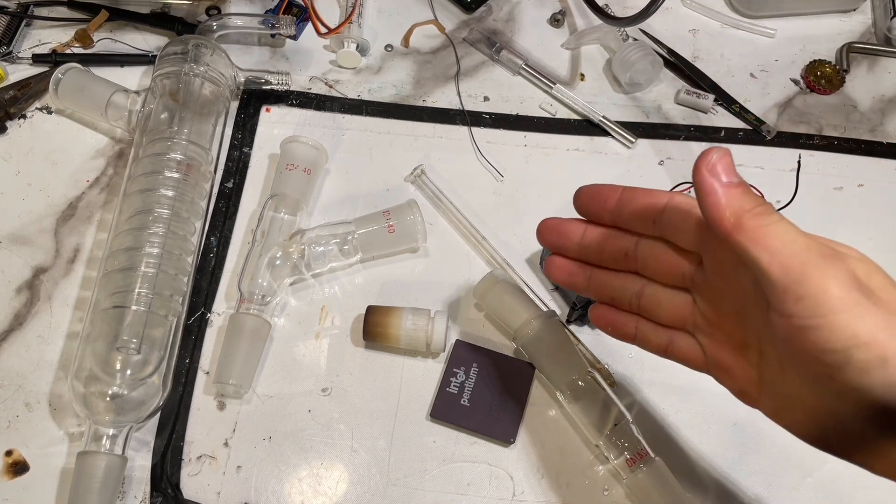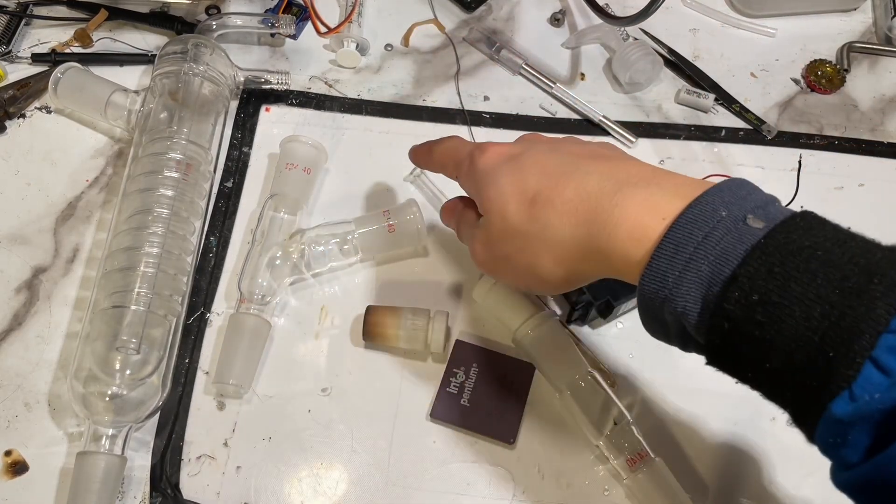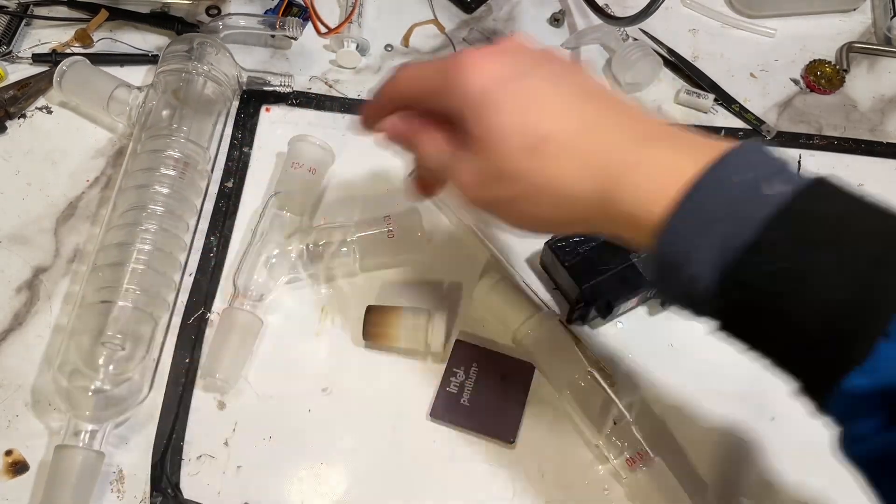Welcome back everyone, today I'll show you how to build a rotary evaporator for cheap, around $40-60. You'll need a condenser, two stir bearings - I'll include all parts in the description.